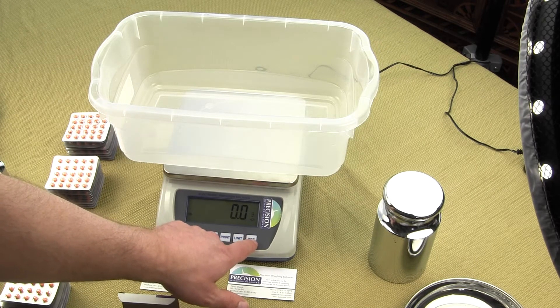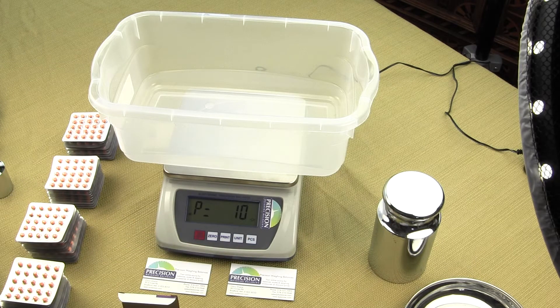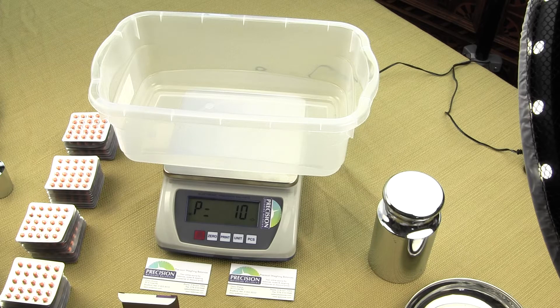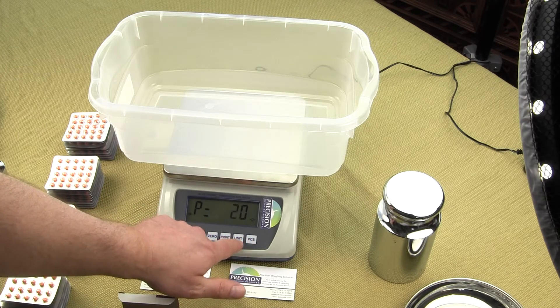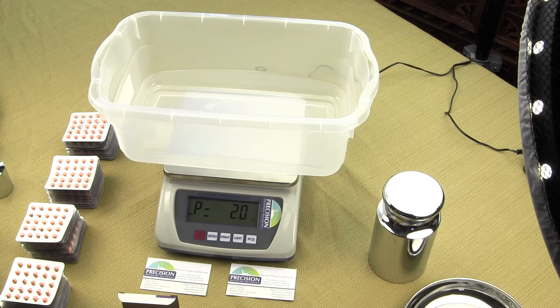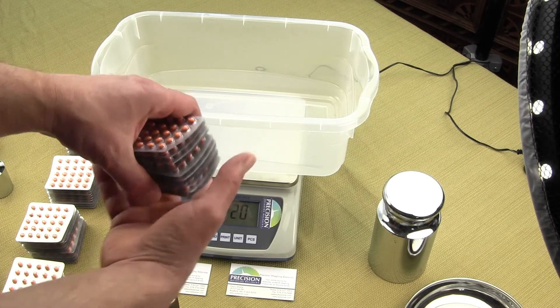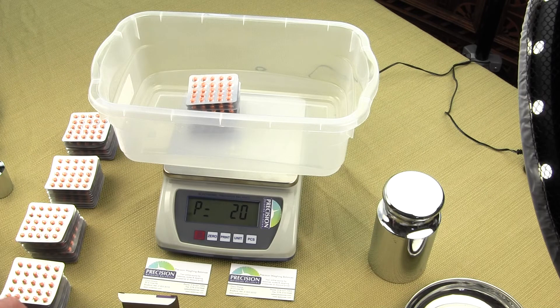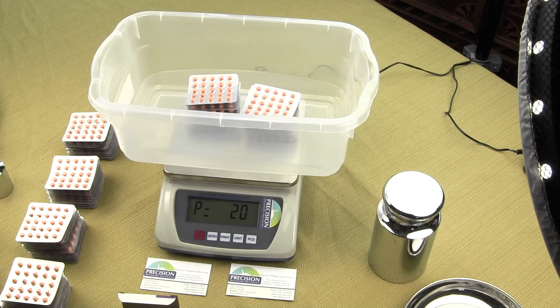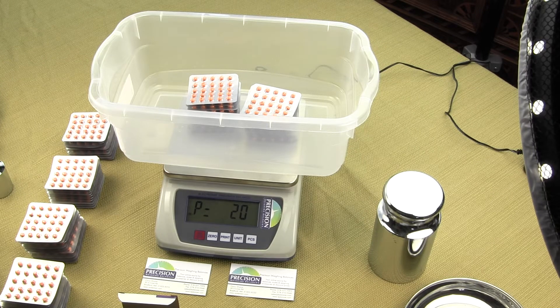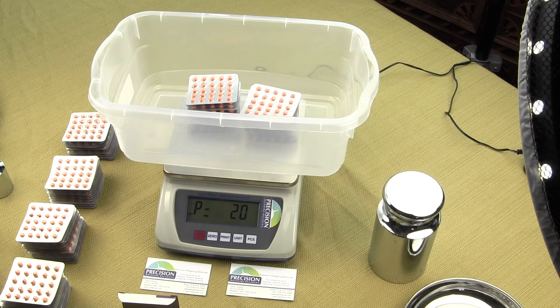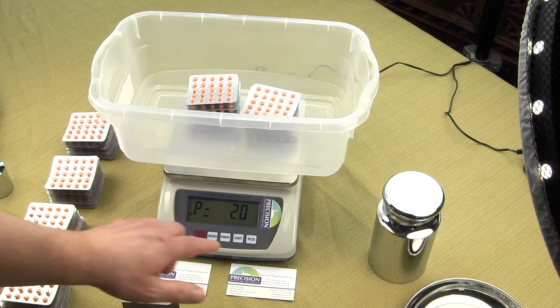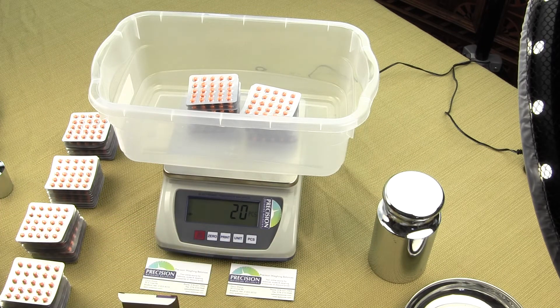Once again, I'm going to press the PCS to get into the parts counting mode. This time, we can use the sample size. The default is 10 parts, but we'll go to 20 parts. I have these blister pads here that somebody sent in to count. There's 10 here and there's 10 here. To store the average piece weight, we've already subtracted out the weight of the container. We wait for that stabilization in the lower left-hand corner, then press the PCS, and it stores 20.